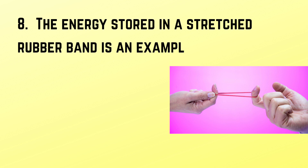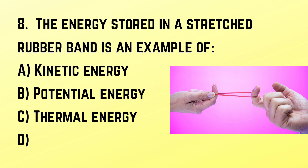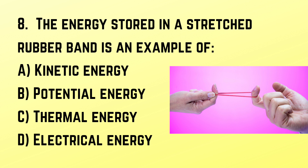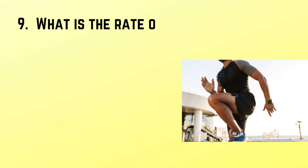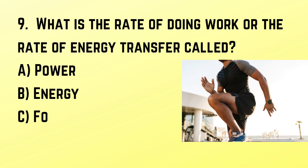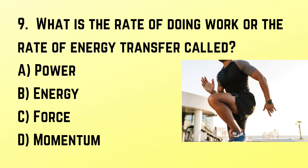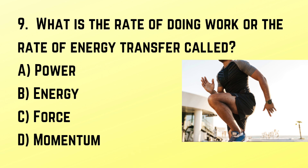Question number 8: The energy stored in a stretched rubber band is an example of what? Correct answer: B. Potential energy. Question number 9: What is the rate of doing work or the rate of energy transfer called? Correct answer: A. Power.